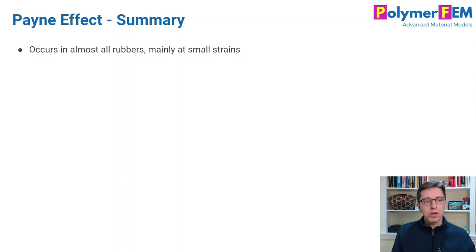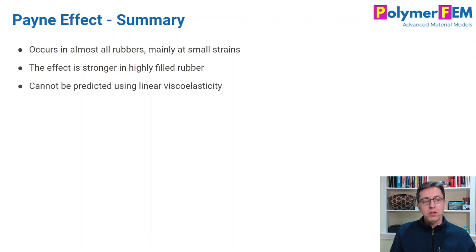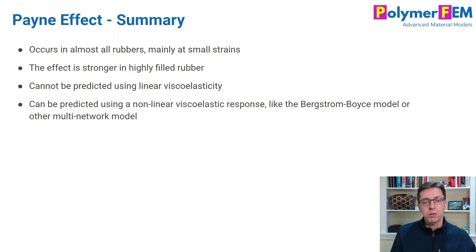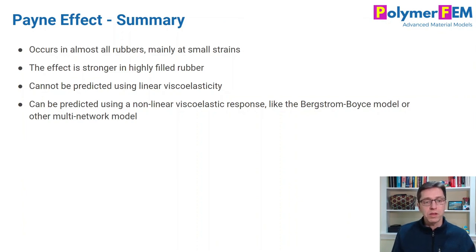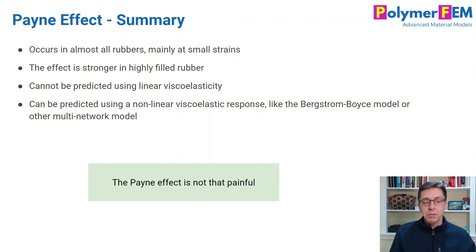To summarize: the Payne effect is real, occurring in almost all rubbers — mainly highly filled rubbers at small strains. You cannot predict it using linear viscoelasticity. However, you can predict it using a nonlinear viscoelastic model like the Bergstrom-Boyce model or a multi-network representation. The Payne effect can be calibrated and used in your simulations, but you need to run the experiments and use a proper material model. If you have questions, head over to polymerfem.com. Thank you.